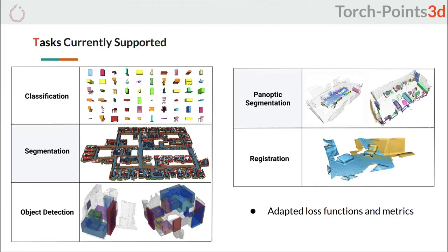TorchPoint3D currently supports the following tasks: shape classification, semantic segmentation, object detection, panoptic segmentation, and registration. Each task comes with its own loss function and tried-and-true metrics.